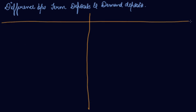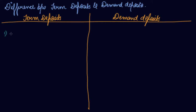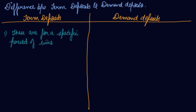Term deposits are also known as fixed deposits. Number one: term deposits are always for a specific period of time — like your fixed deposits which are for a period of one year or more. But demand deposits are not for any specific period of time.